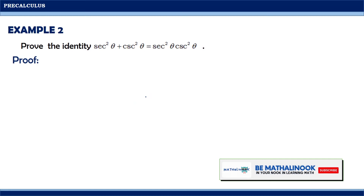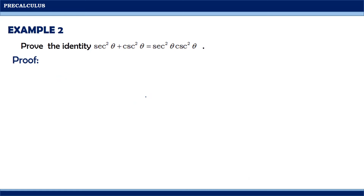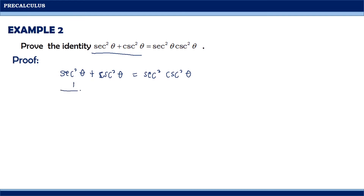Let us take a look at this example. Prove the identity: secant squared theta plus cosecant squared theta equals secant squared theta times cosecant squared theta. This time, let us manipulate the left side of the equation and show it equals the right side. Let us rewrite the given, expressing secant squared theta and cosecant squared theta in terms of sine and cosine. So we get 1 over cosine squared theta plus 1 over sine squared theta equals the right side.